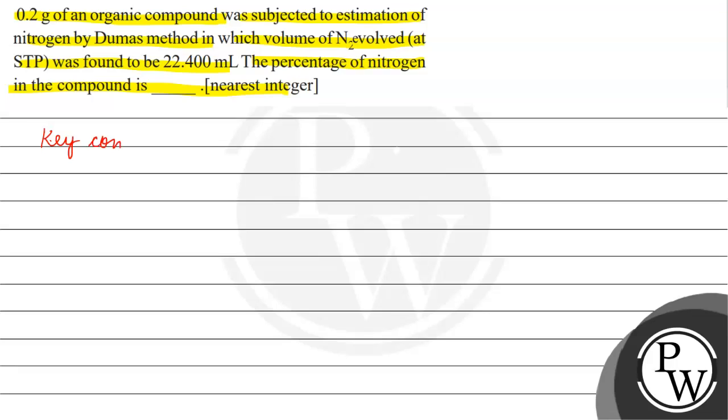The key concept for this question is Dumas method. Dumas method is basically used for quantitative estimation of nitrogen. Here we're given that the volume of nitrogen evolved at STP is 22.4 milliliters.